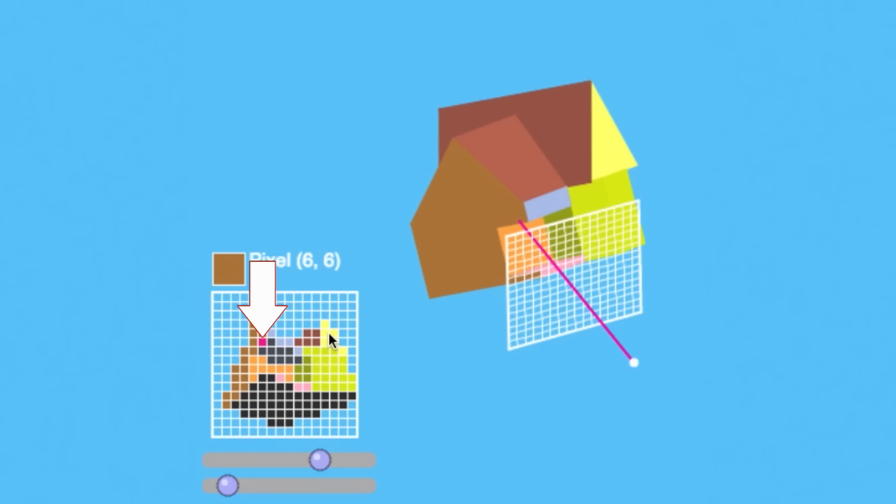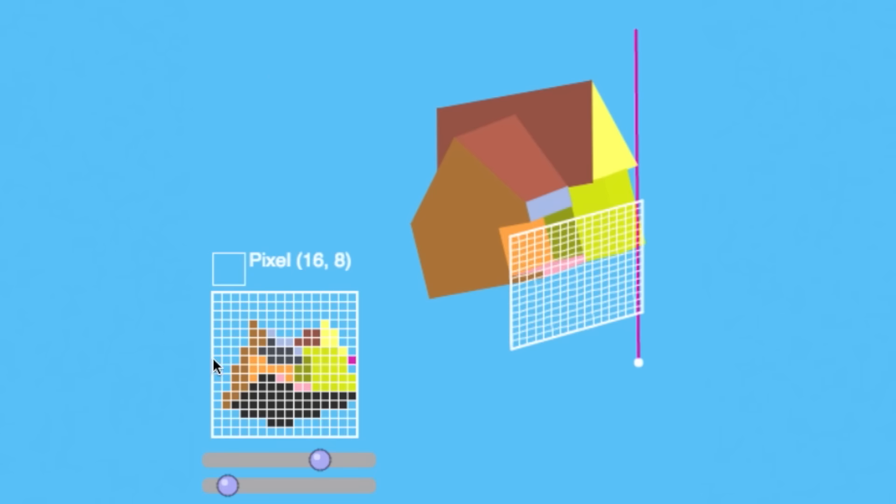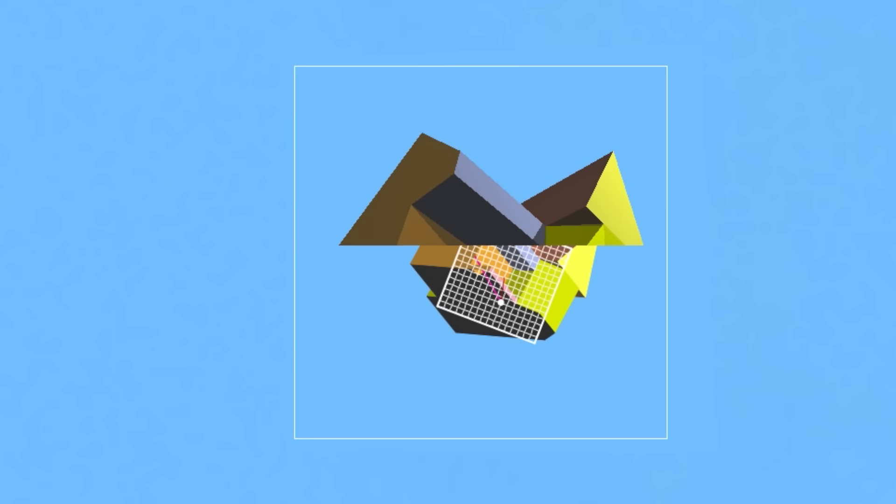So this pixel would be colored brown, this one yellow, and so forth for the other pixels. This process is done for all of the pixels in the image.